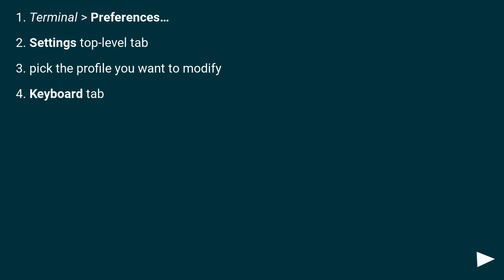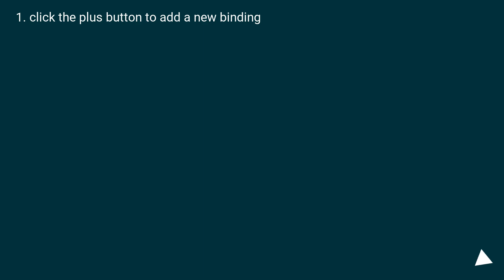Go to Terminal > Preferences, Settings top-level tab. Pick the profile you want to modify, then go to the Keyboard tab. Click the plus button to add a new binding.